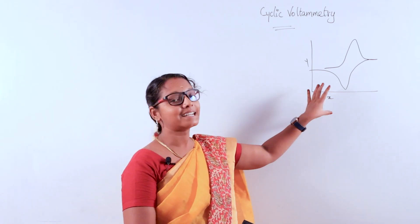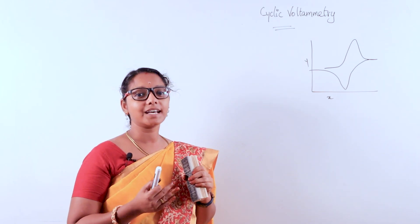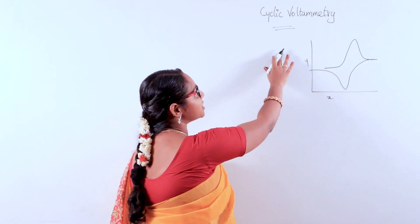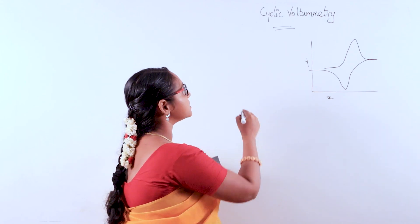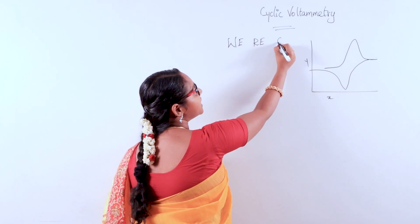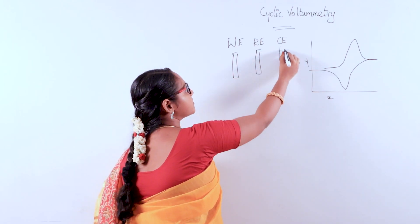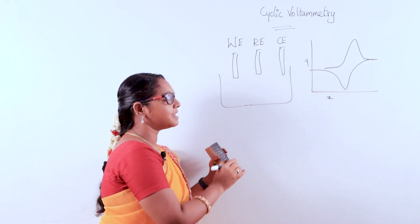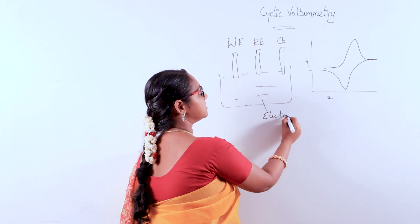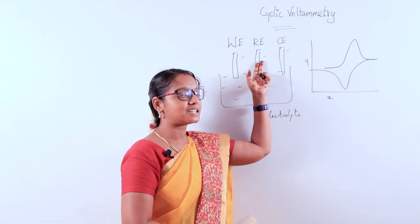This is the cyclic voltammetry curve. Cyclic voltammetry is used for electrochemical techniques to perform qualitative analysis. It is a three-electrode system. The three electrodes are the working electrode, reference electrode, and counter electrode, all placed in an electrochemical cell with an electrolyte.